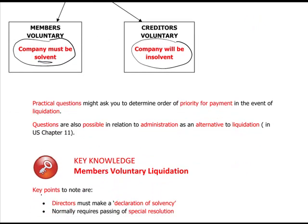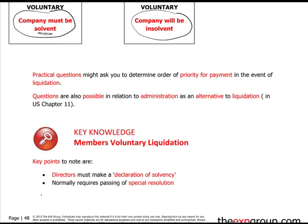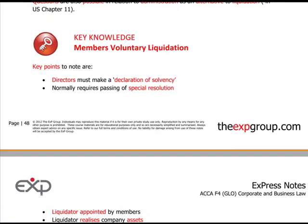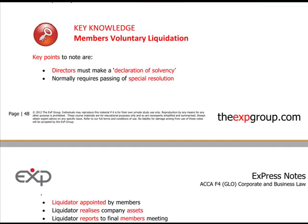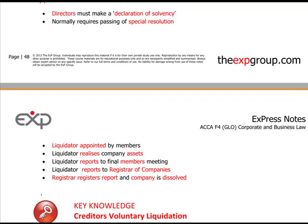Members' voluntary liquidation: key points to note are that directors must make a declaration of solvency — they must actually be solvent and declare that, having it audited and checked. They must pass a special resolution, not an ordinary resolution. The liquidator is appointed by the members, the liquidator realizes the company's assets, and reports to a final members' meeting.